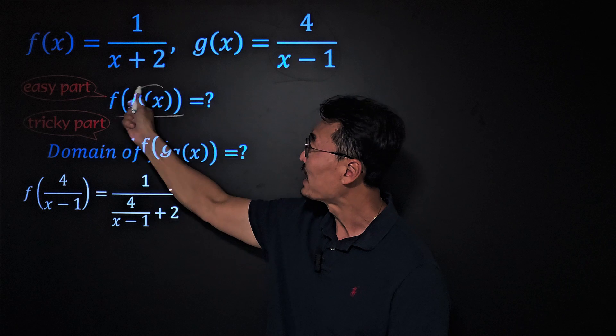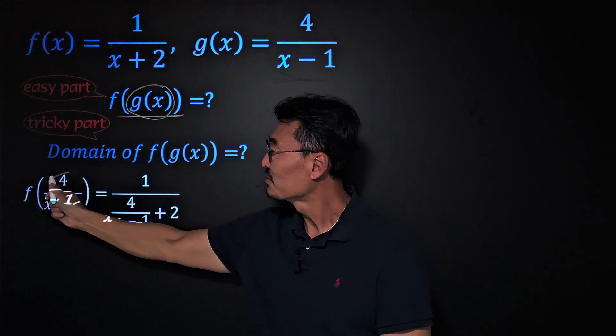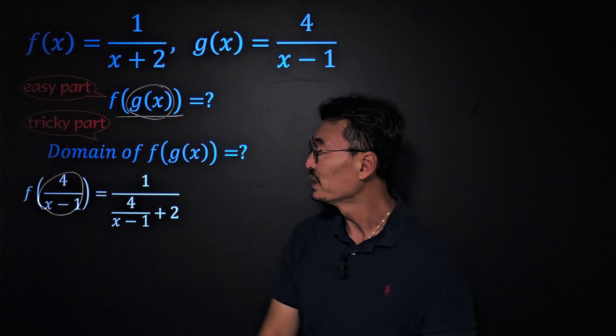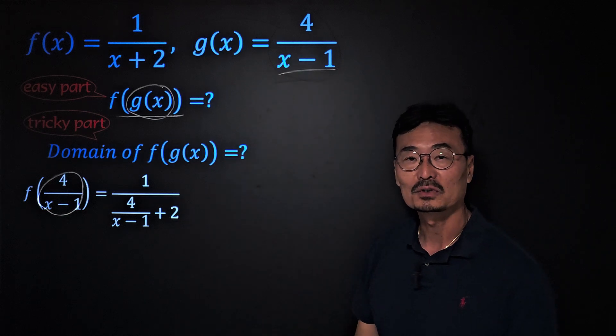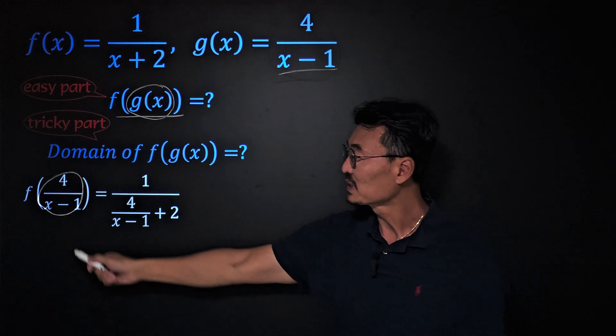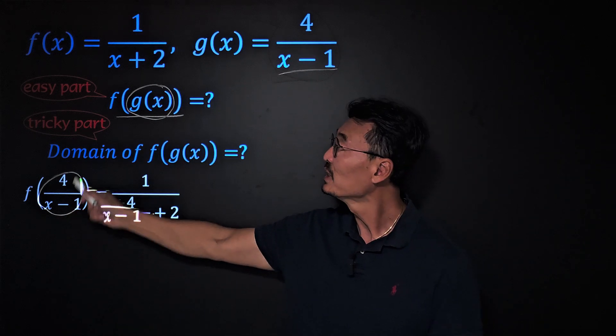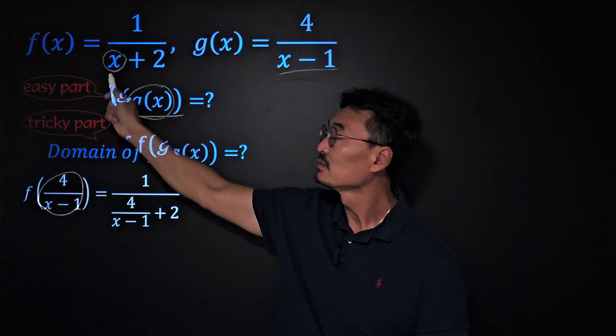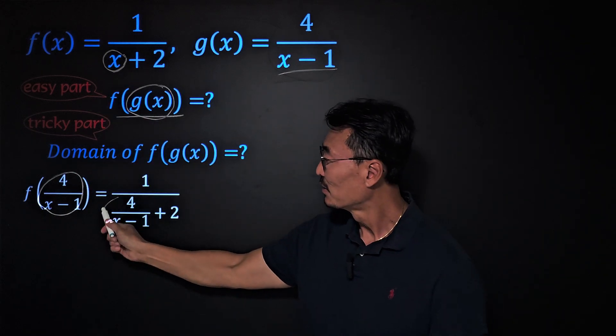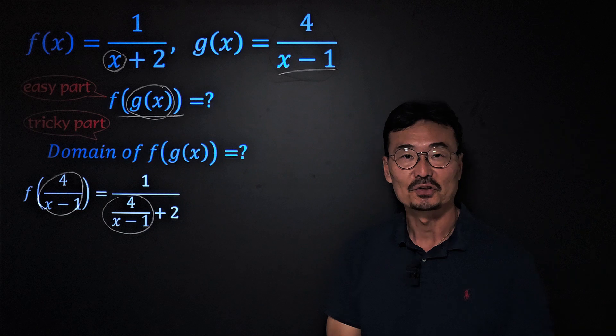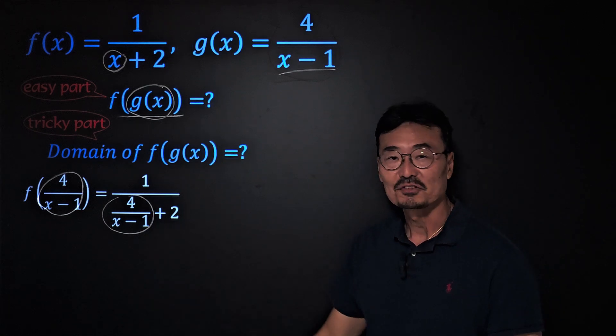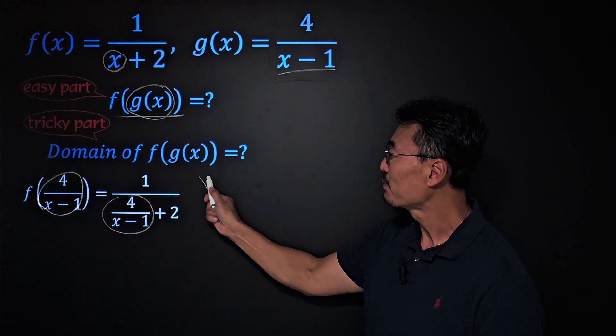Notice where we have that g(x), I've substituted or replaced it with the g(x) or 4/(x-1). Now it's time to take that 4/(x-1) and plug it into the x of the f(x) like so.